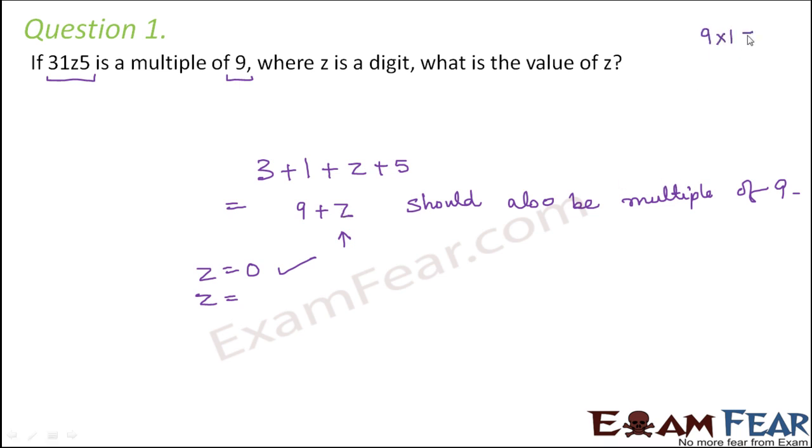Now, when you look at the multiples of 9, the first multiple is 9, what is the second multiple? That is 18. So in order to get 18, the value of z should be 9, right? If you put z as 9, so 9 plus 9 will be 18, which is a multiple of 9. So z equals 0 and z equals 9 are the two possible values that z can take as a digit.